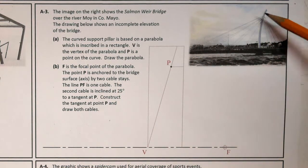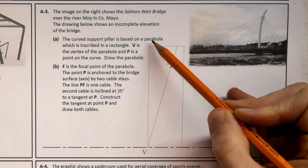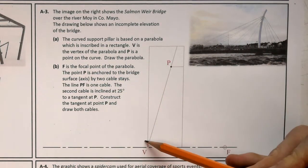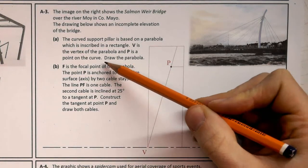We've got our curved support pillar which is going to be here, and it's based on a parabola. V is the vertex of the parabola and P is a point on the curve. Draw the parabola.